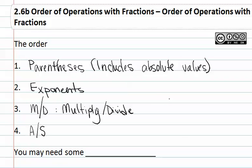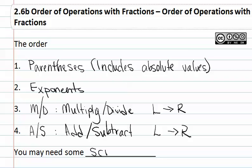This is because you do Multiply and Divide as they appear from left to right. A and S is for Add and Subtract, and this you also do from left to right as they appear, which means sometimes you may be doing Multiplying before Divide or Divide before Multiply, the same with adding and subtracting. For order of operations with fractions, you may need some scratch paper, or you just use the side of your paper.